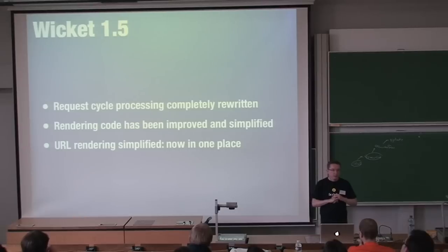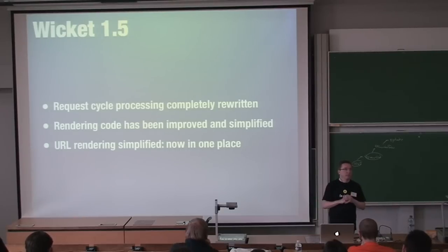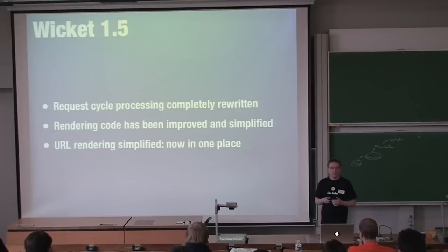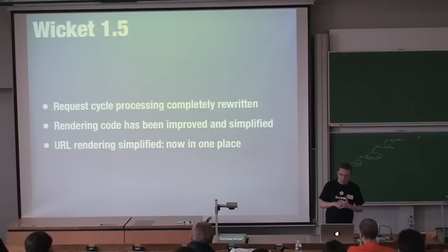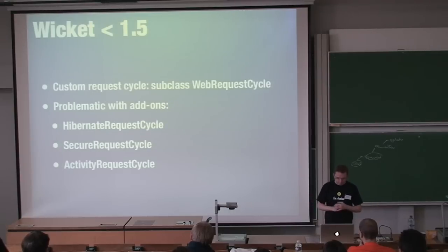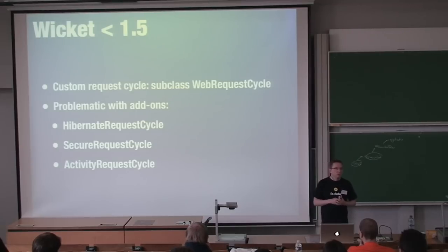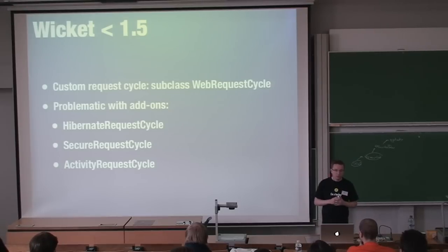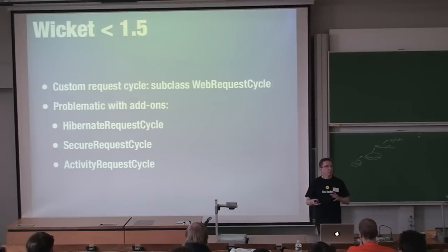The request cycle processing in 1.5 is completely rewritten — you probably won't notice unless you step into the code. The rendering code has been improved and simplified. URL rendering has been completely rewritten and simplified; previously URL generation was scattered around the core framework, now it's in one place. If you have a custom web request cycle class, you still can extend WebRequestCycle, though the new approach is preferred.